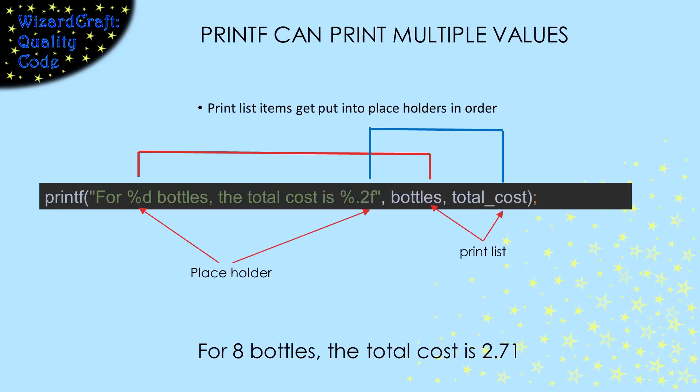After that first parameter, printf has a variable length parameter list, which means we can pass any number of arguments into it. So we can put multiple placeholders in our format string, and the rest of the arguments will be formatted in the order that they're given. For this example, the %d will format the value in bottles, and the %.2f will format the value in total cost.